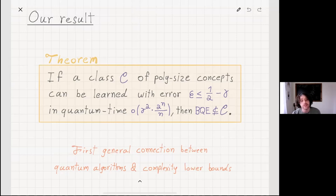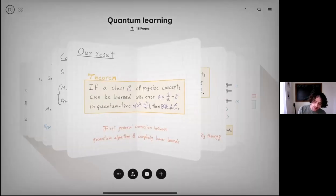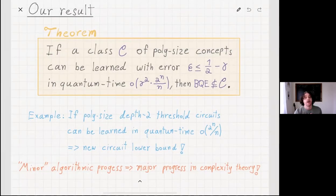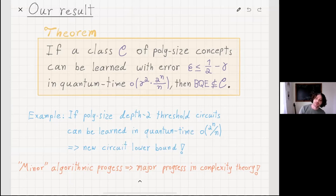This is, to the best of my knowledge, the first general connection that we have between quantum algorithms and complexity theory. I want to illustrate this theorem with an example. I mentioned these depth two threshold circuits. If we can learn them in quantum time which is just little o of two to the n over n, already we have new exciting circuit lower bounds. The main message I'm communicating here is that even minor algorithmic progress can lead to major progress in complexity theory.